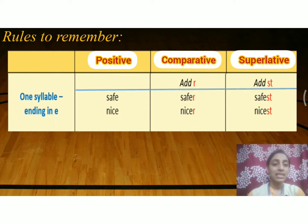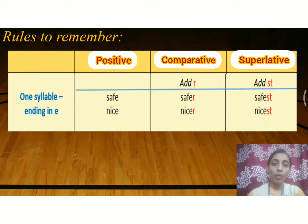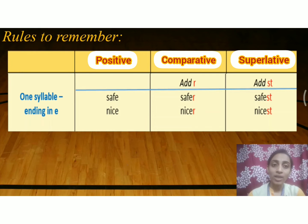Now look at the adjective 'safe'. Safe is a one-syllable adjective ending in E — S-A-F-E. For adjectives ending in E, to change them into comparative form we add only -r, and in their superlative form we add only -st. The comparative form of 'safe' is S-A-F-E-R: safer. The superlative form of 'safe' is S-A-F-E-S-T: safest.